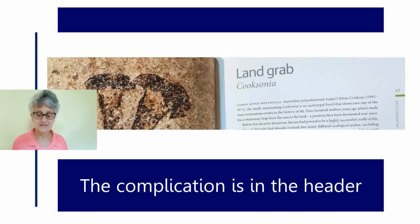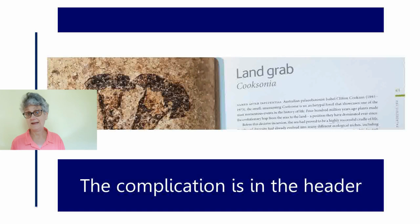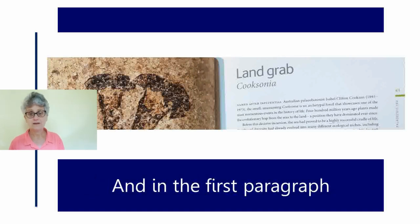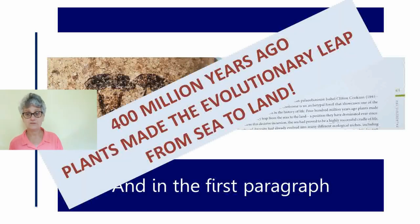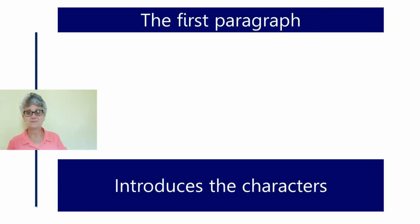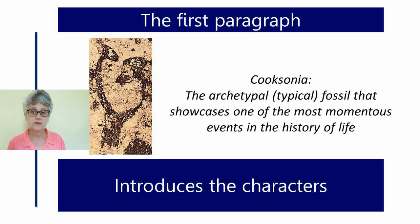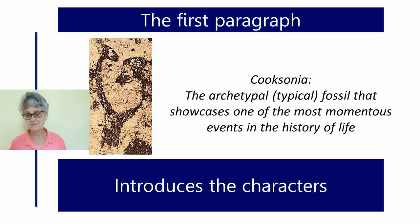In this little section, we've got the header already conveying the complication: land grab. And in the first paragraph, the authors tell us what this complication is — 400 million years ago, plants made the evolutionary leap from the sea to the land. The first paragraph also introduces the main character, Cooksonia. Cooksonia is the archetypal fossil — the typical fossil — that showcases one of the most momentous events in the history of life: the move from the sea to the land.